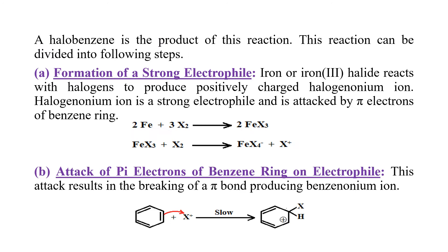Halogenation reaction की product है एक halobenzene। हम इस reaction को तीन steps में divide कर सकते हैं। पहला step है formation of a strong electrophile। हमने iron को catalyst के तौर पे लिया है या iron(III) halide को - the electrophile we get is halogenonium ion। Iron halogen molecule के साथ react करके iron(III) halide बना देता है, जो further एक halogen molecule से react करके tetrahaloferrate ion और halogenonium ion बना देता है।